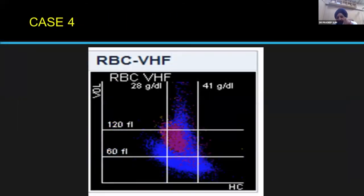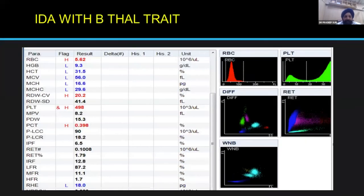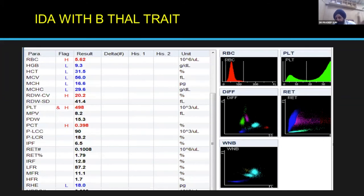Case 4 looks much like Case 2 — there is a shift both to the left and downward. Here we have a concomitant case of both IDA along with beta-thalassemia trait. The hemoglobin is 9.3, MCV is 56, the Menzter index is again less than 13, RDW-CV is 20.2, and ret hemoglobin is low at 18. So it is giving you both pictures — telling you that it is both beta-thalassemia trait and iron deficiency anemia, although from the optical RBC scatterplot alone, plots 4 and 2 would look pretty identical.